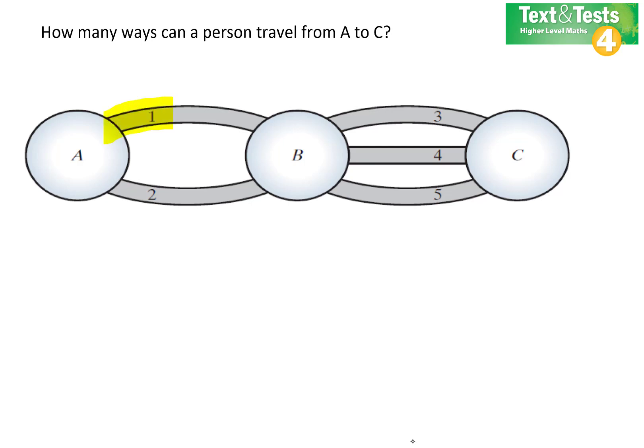Maybe you would start at A and take road 1, get to B and then take road 4. That's one of the options you could take. Another option is you could take road 2 and then road 4. But how many options are there all together?